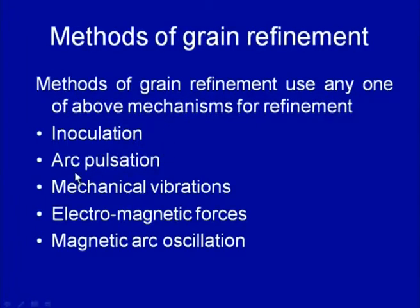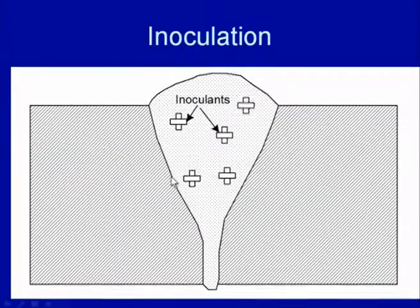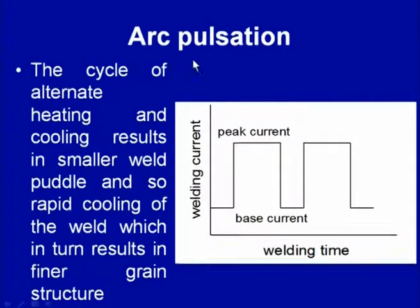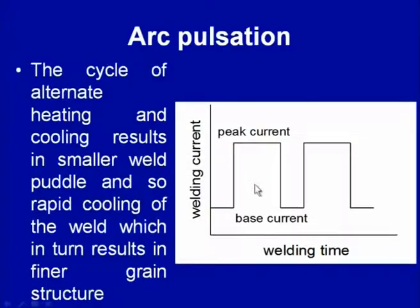Based on these fundamental mechanisms, various methods of grain refinement have been developed: inoculation, arc pulsation, mechanical forces, electromagnetic forces, and arc oscillation. In inoculation, something is added from outside to act as a nucleant. Common compounds added include aluminum, vanadium, titanium boride, and titanium aluminide for refining steel and aluminum welds. Arc pulsation is another approach where heat input is reduced; reducing heat input increases the nucleation rate and decreases the growth rate. Increased nucleation rate results in a large number of nucleants for solidification, and when present in large amounts they refine the grain structure.